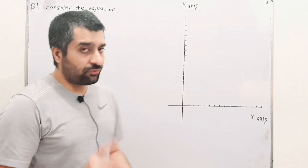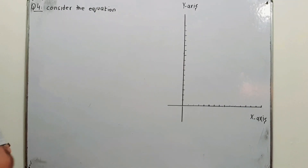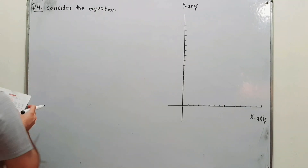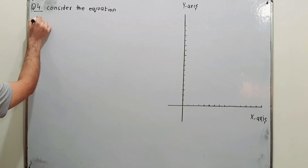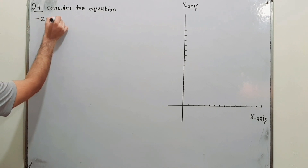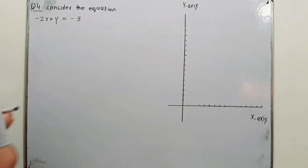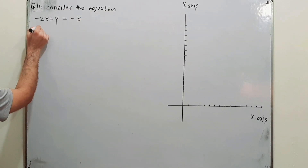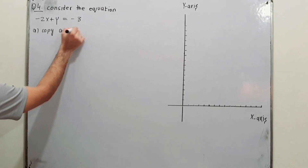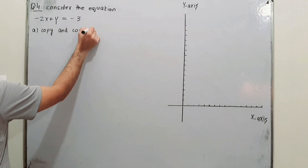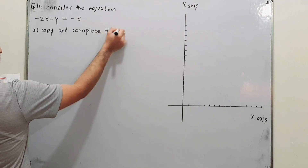Starting from question number four of Exercise 2B of D2 Seventh Edition: consider the equation minus 2x plus y is equal to minus 3. Part A says copy and complete the table.